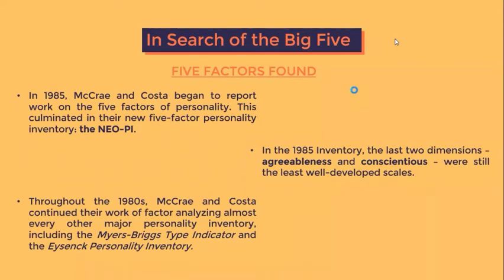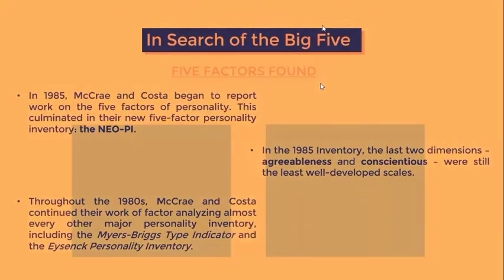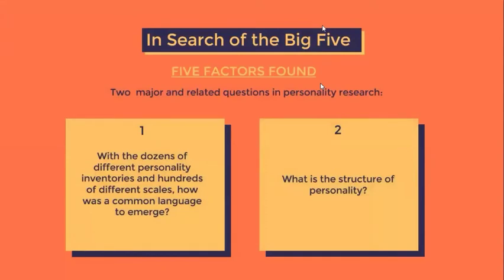In the 1985 inventory, agreeableness and conscientiousness were still the least well-developed scales, until the NEO-PI-R or revised NEO-PI was published in 1992. Throughout the 1980s, McCrae and Costa continued factor analyzing almost every other major personality inventory, including the Myers-Briggs Type Indicator and the Eysenck Personality Inventory. Two major questions in personality research were: how was a common language to emerge given dozens of different inventories, and what is the structure of personality — with Cattell having 16 factors, Eysenck 3, and others arguing for 5.